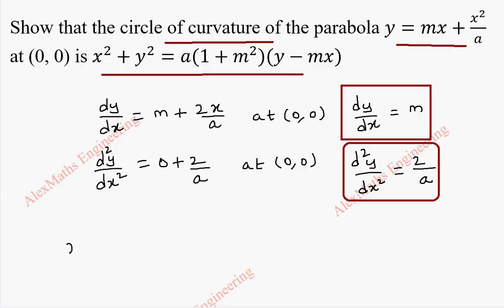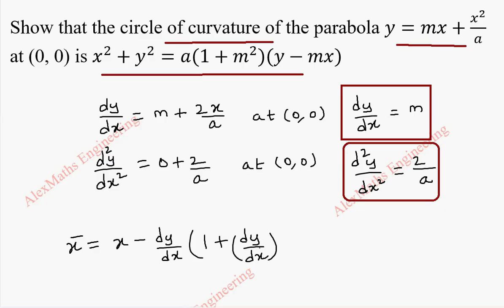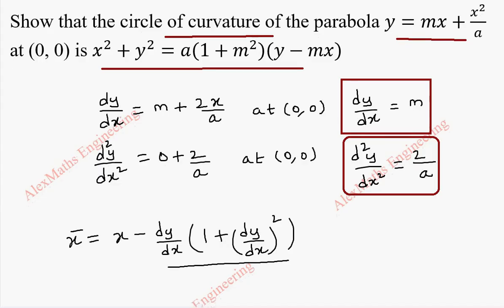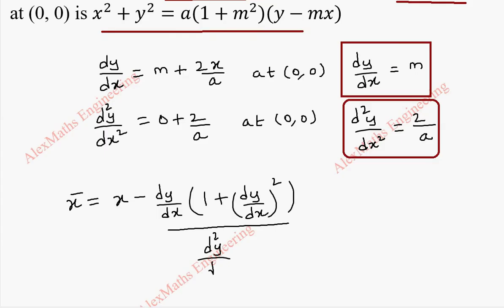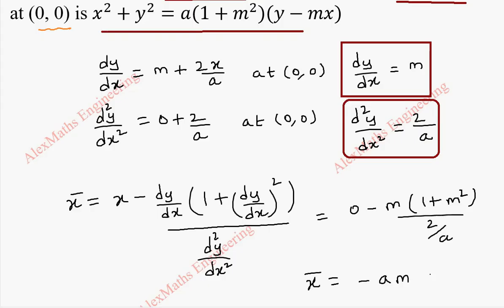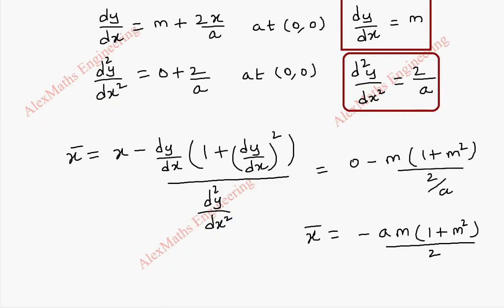Now the formula for x̄ is: x minus dy/dx times (1 plus (dy/dx)²) whole divided by d²y/dx². The value of x is 0 because we are given at the origin (0, 0). So this becomes 0 minus m times (1 plus m²) divided by 2/a. This a will be taken to the numerator, so x̄ is minus am(1 plus m²) divided by 2.